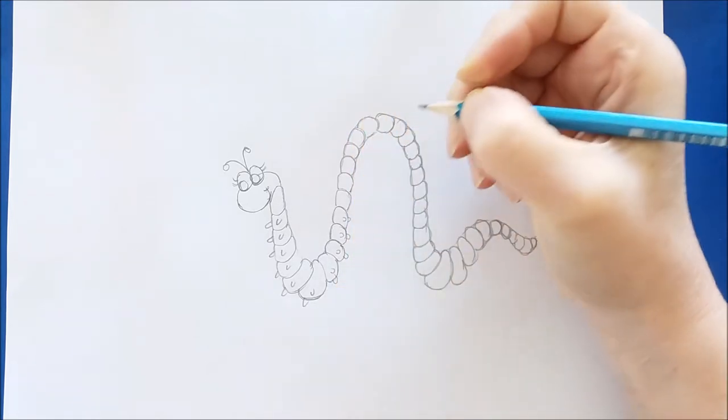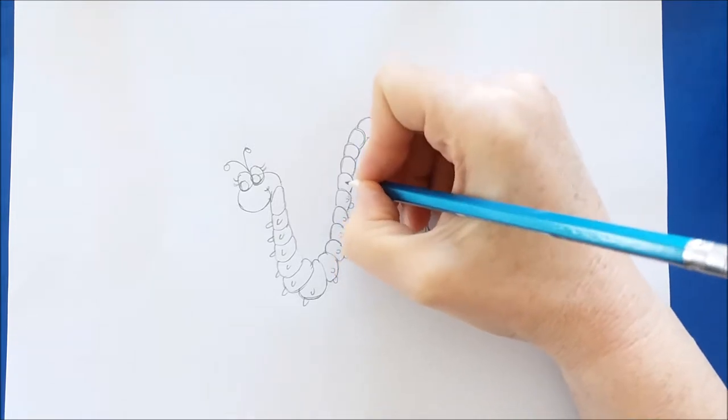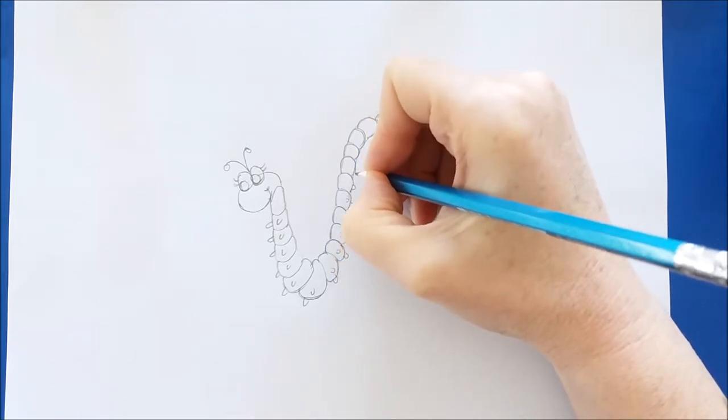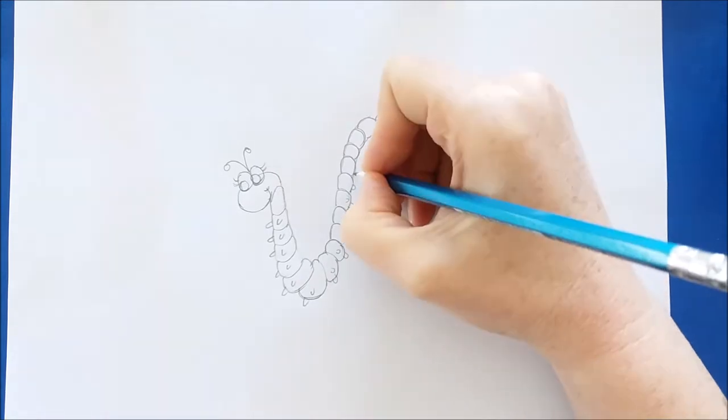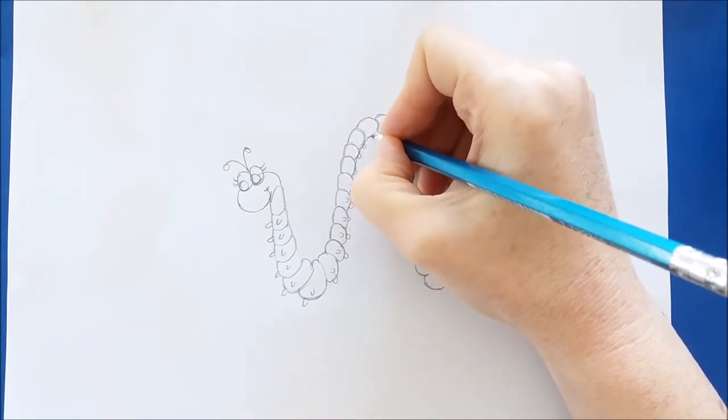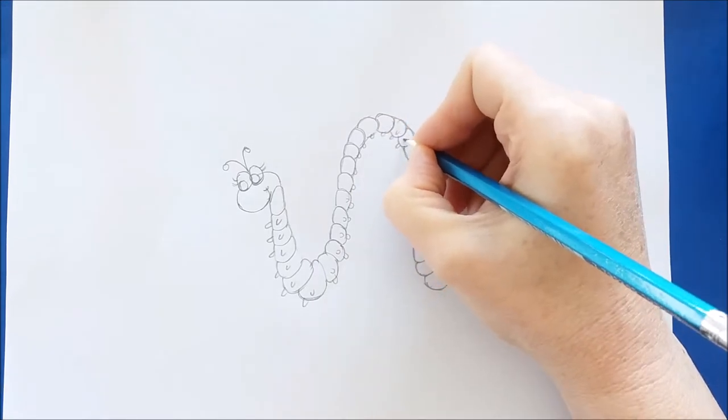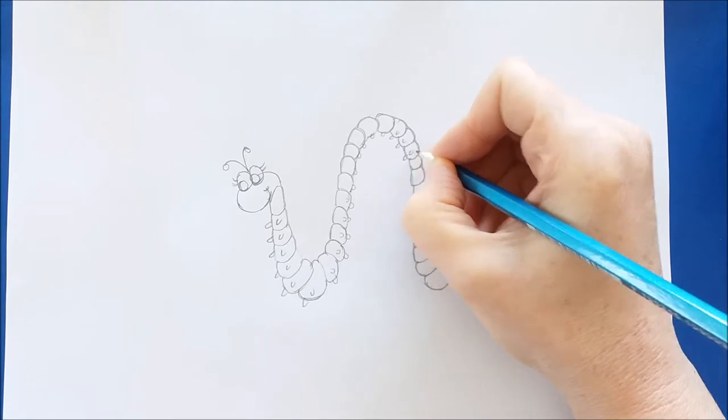You can draw two and then as you get closer to the arc in the inchworm's body, we'll just draw maybe one of these little U shapes. And that just gives the illusion that the inchworm is crawling along with this big arc.